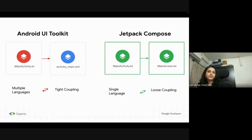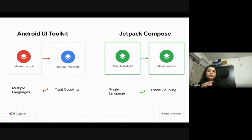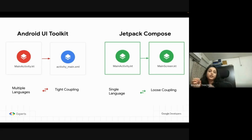In the current Android UI toolkit, your activity file is in Java or Kotlin and your views are in XML — two different languages. Because of this language difference, you cannot directly communicate with the XML file. You first have to inflate it into a Kotlin or Java object, then communicate with it. This indicates tight coupling and introduces a dependency. In Compose, everything is in one language — Kotlin. The UI is built using composable functions written in Kotlin.